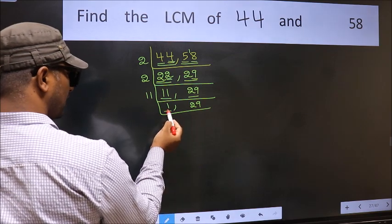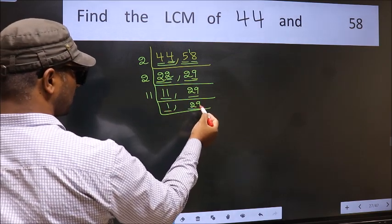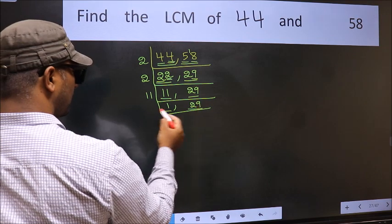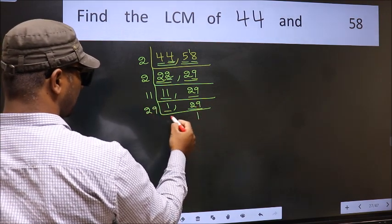Now we got 1 here. So focus on the next number 29. 29 is a prime number, so 29 once is 29.